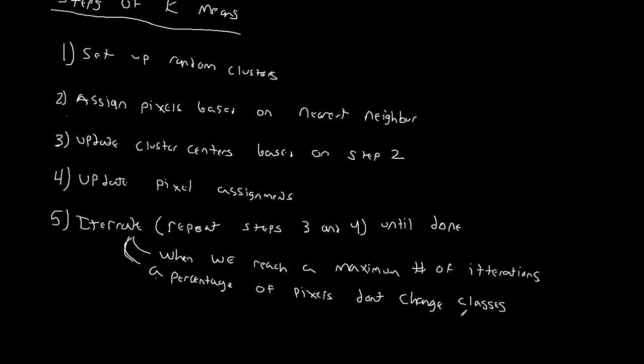Just to reiterate — and we'll go through an example in the next video — the five steps of k-means: one, set up your random clusters, which means generate random numbers within the range of the data set. Two, assign your pixels based on which cluster center you are closest to — that's what nearest neighbor means. Three, update the cluster centers relative to the data assigned to them. Four, update those pixel assignments because you've changed the location of the cluster center. Five, iterate: move, update assignment, move, update assignment, until you either hit the maximum number of iterations or the pixels don't change classes.